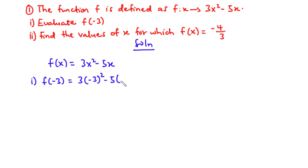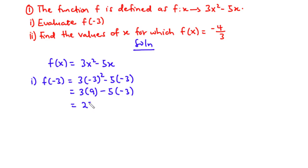We have 3 times negative 3 squared minus 5 times negative 3. Negative 3 squared is 9, so we have 3 times 9 minus 5 times negative 3. 3 times 9 is 27; negative 5 times negative 3 is positive 15. So 27 plus 15 is 42. Therefore f of negative 3 equals 42.